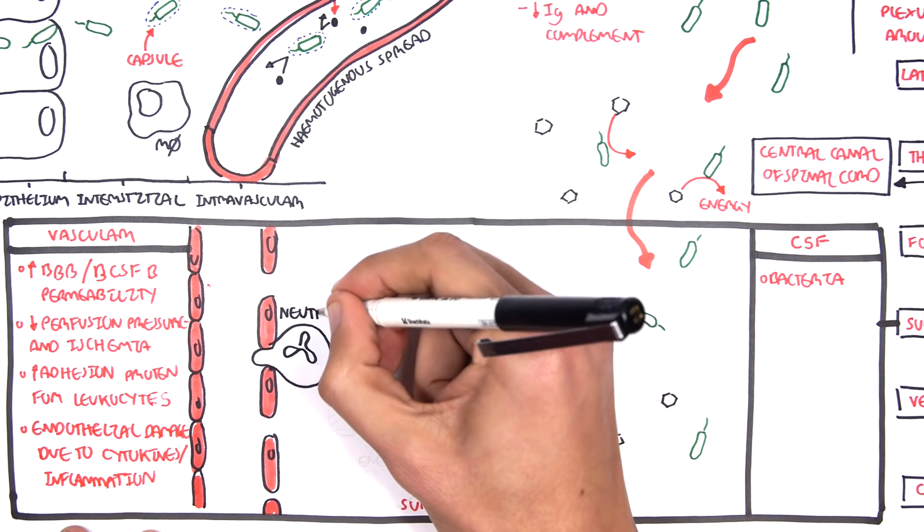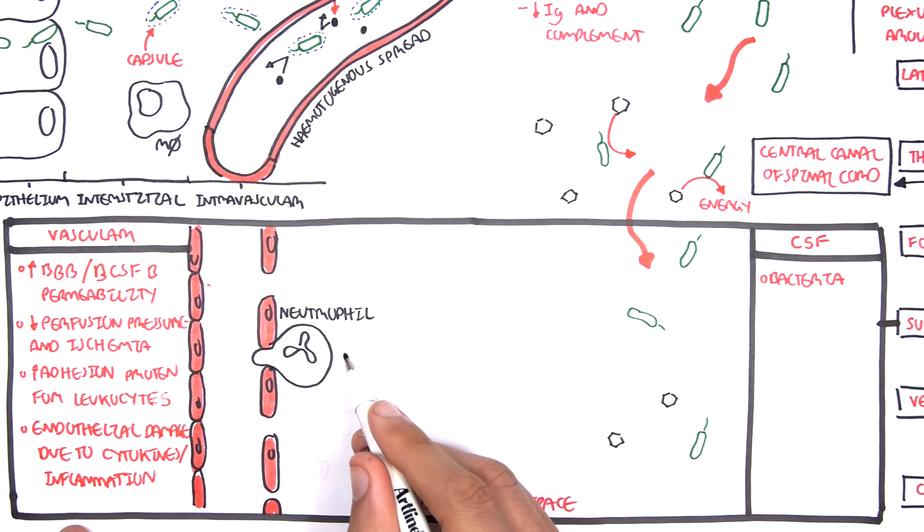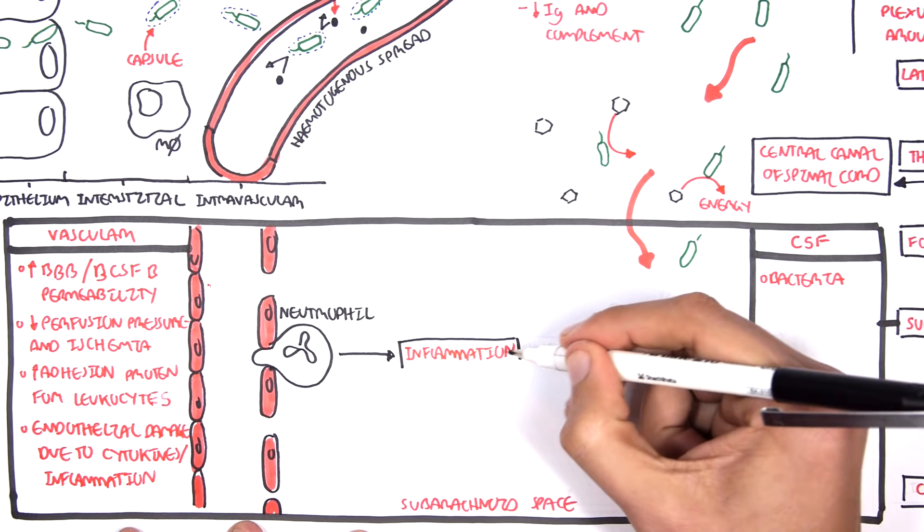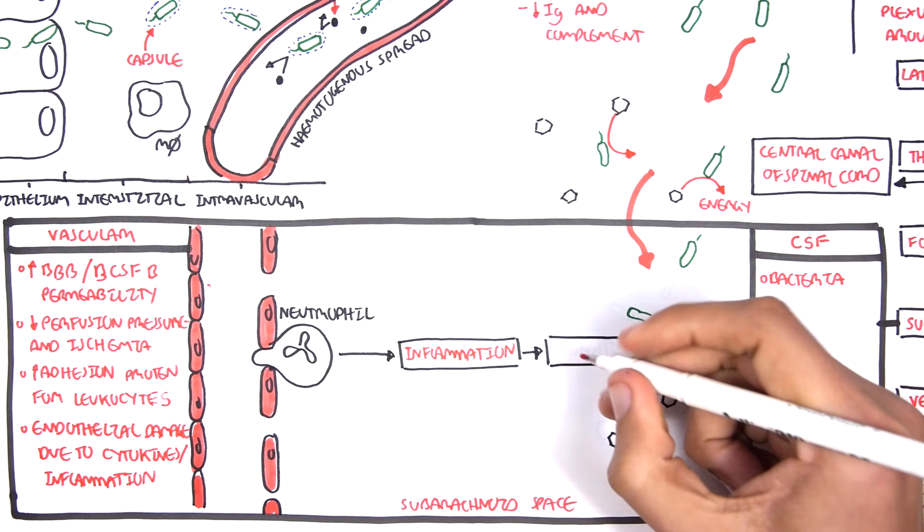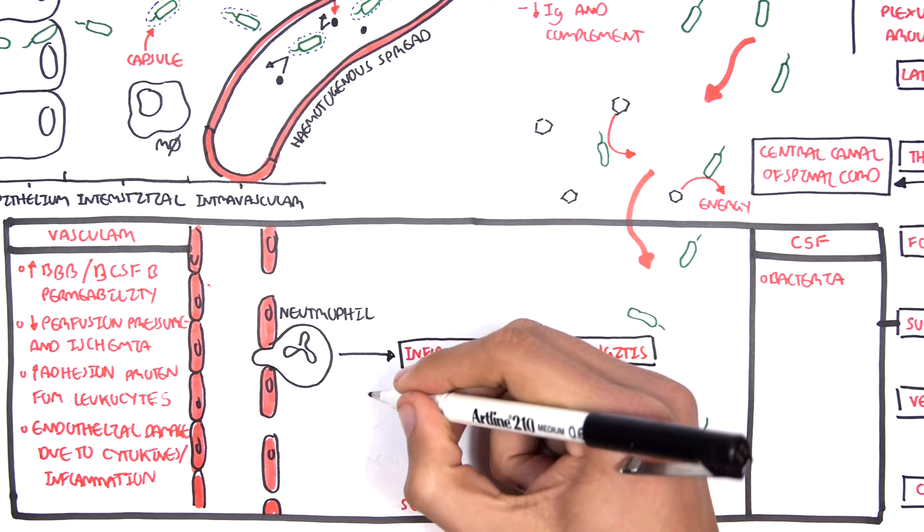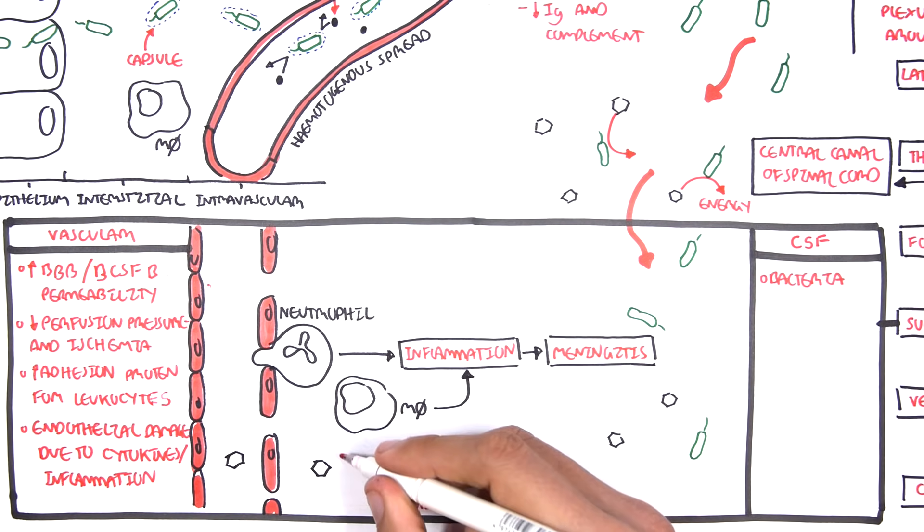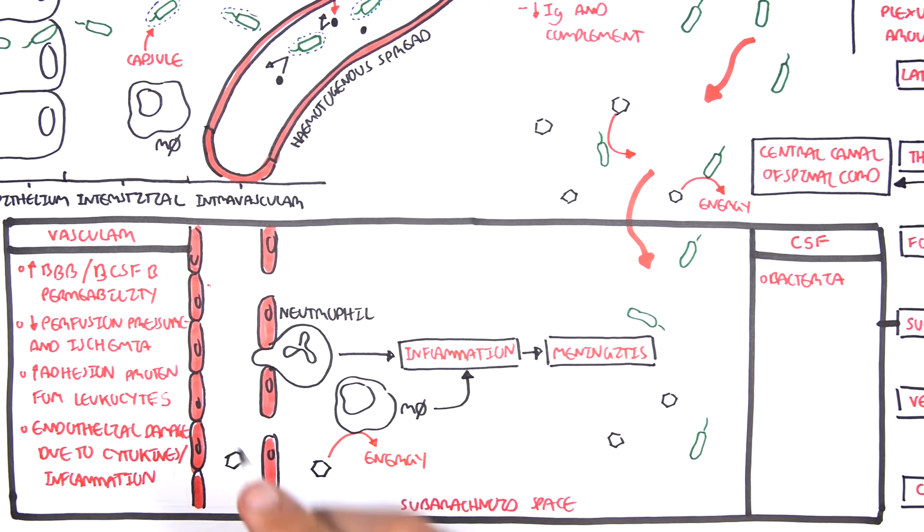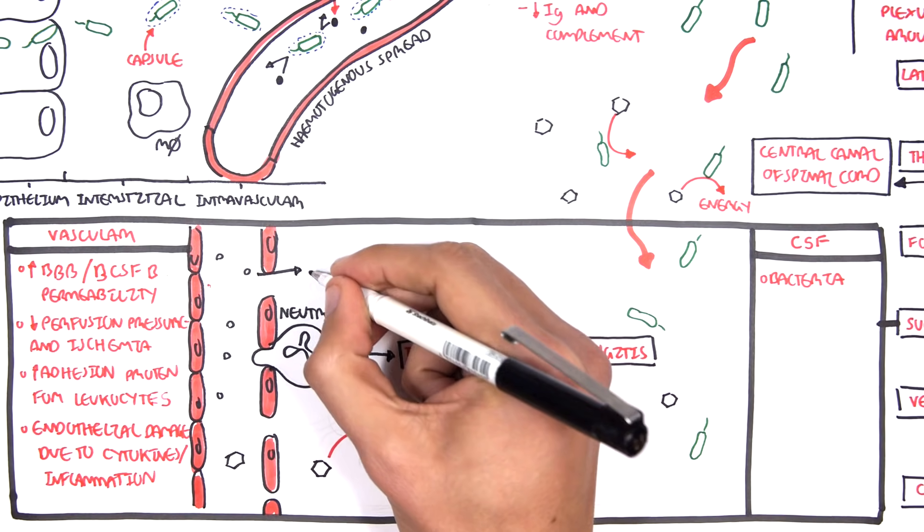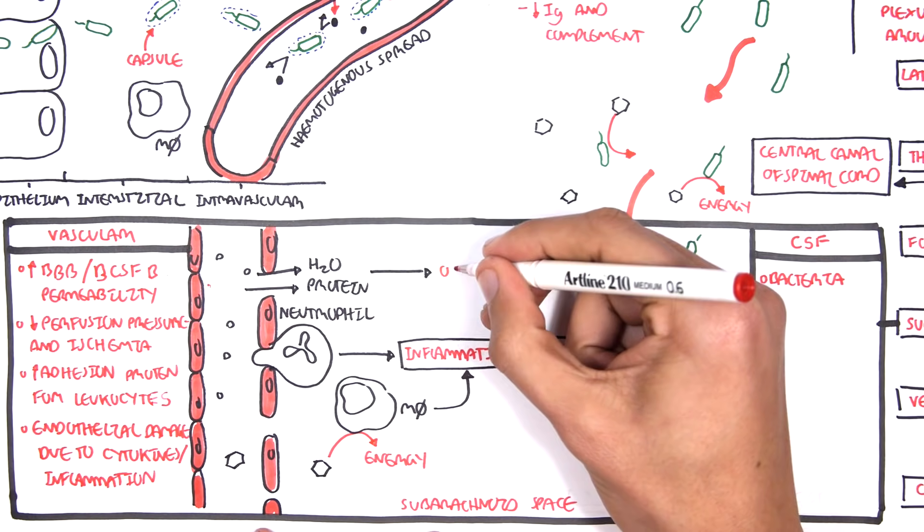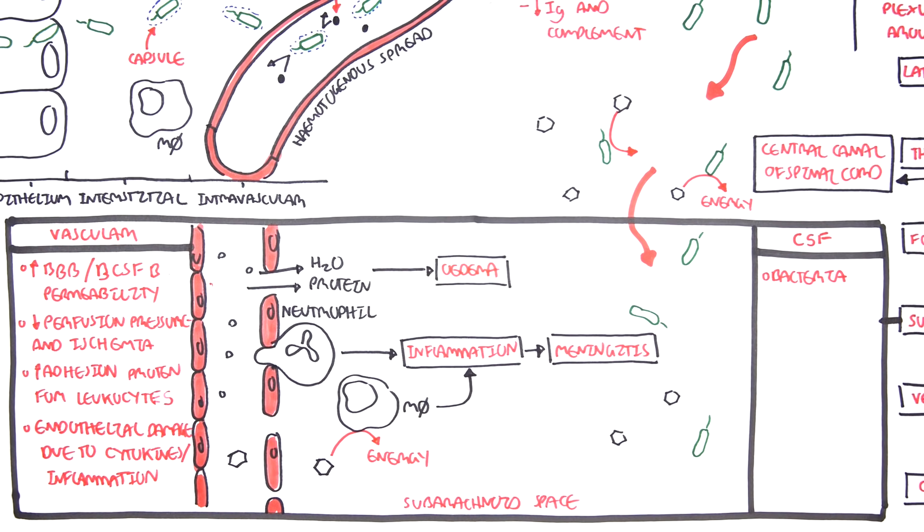So for example you have neutrophils entering the area thanks to an increase in vascular permeability and adhesion proteins. They essentially cause inflammation, they trigger inflammation, they release so many cytokines. Macrophages also enter the area and cause inflammation. It's important to note that macrophages also use glucose as a source of energy. Because there is an increase in vascular permeability, water and proteins can leak inside the subarachnoid space causing cerebral edema and subsequently increasing intracranial pressure.